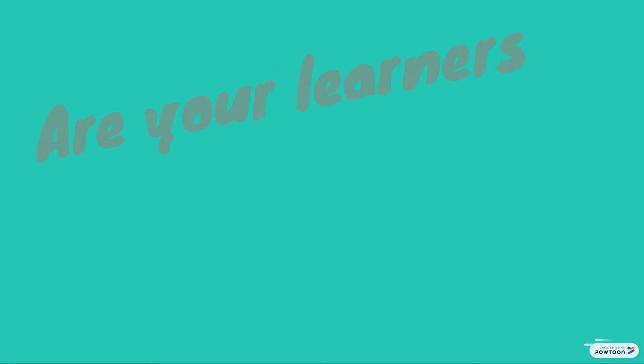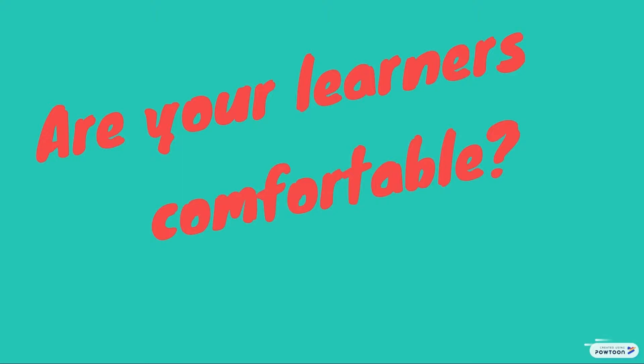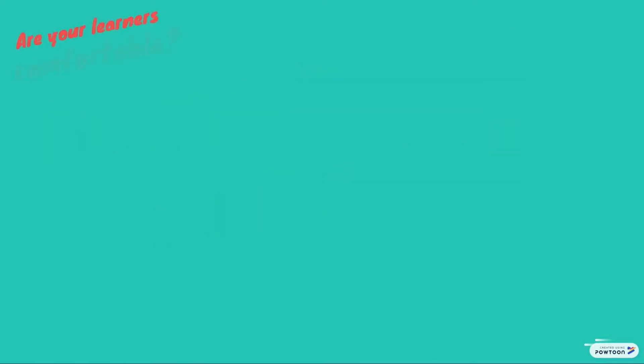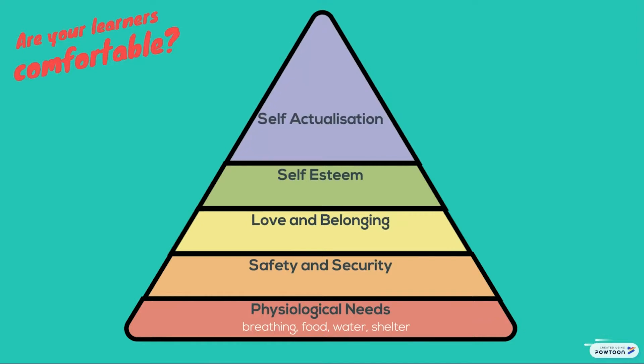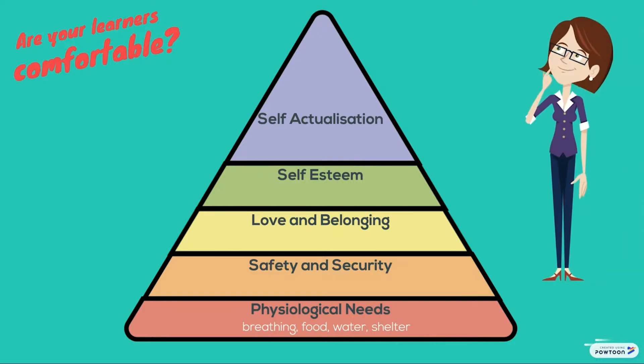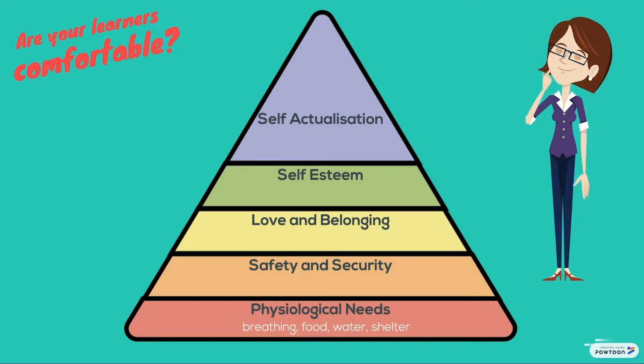It may not be the first thing that springs to mind when we consider setting up learning opportunities, but asking whether your learners are comfortable is an important question if we want them to be receptive to our teaching. If we begin with the bottom layer of Maslow's hierarchy, consider the space we are working in. How is the ambient temperature? If the room is too hot or too cold, will your learners be able to maintain their concentration? Have we figured in regular breaks for comfort, food, and water?